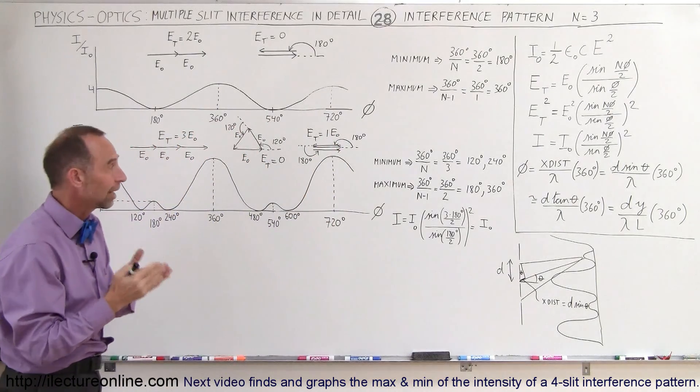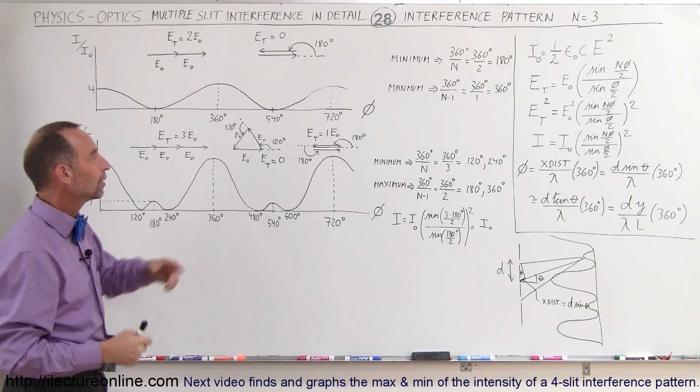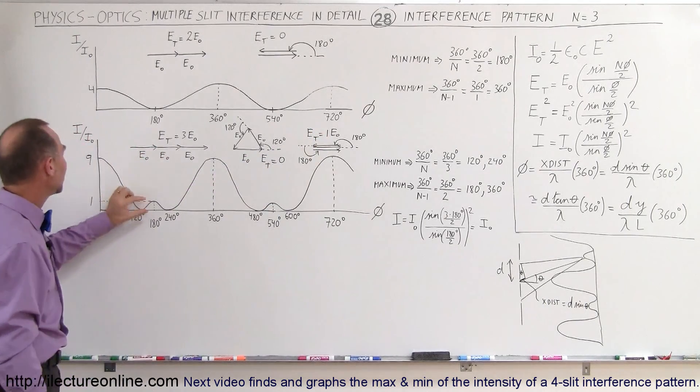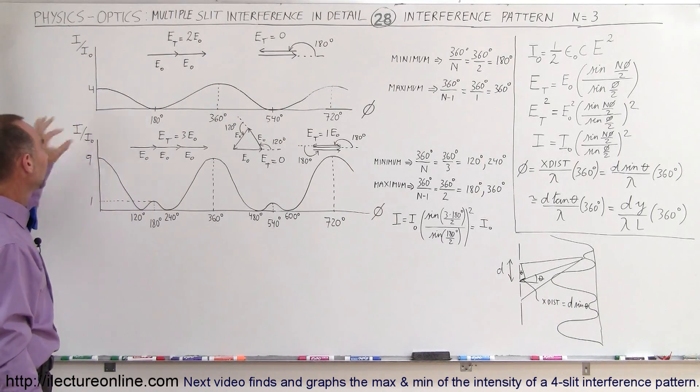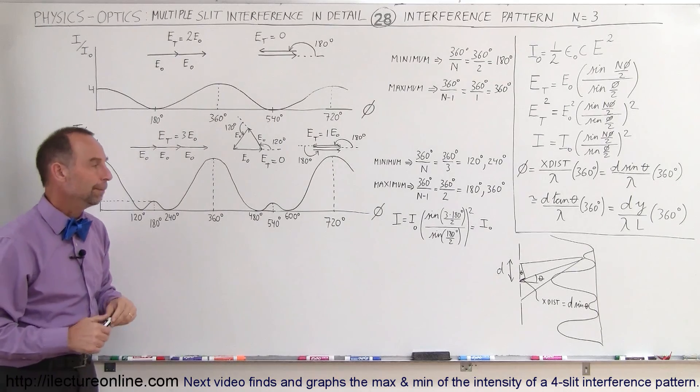So the three phasors together, like that, add up to the maximum of one phasor. And so therefore, the intensity will be one squared, or one times the intensity of a single beam right there. And so that's indicated by this small maximum right there.